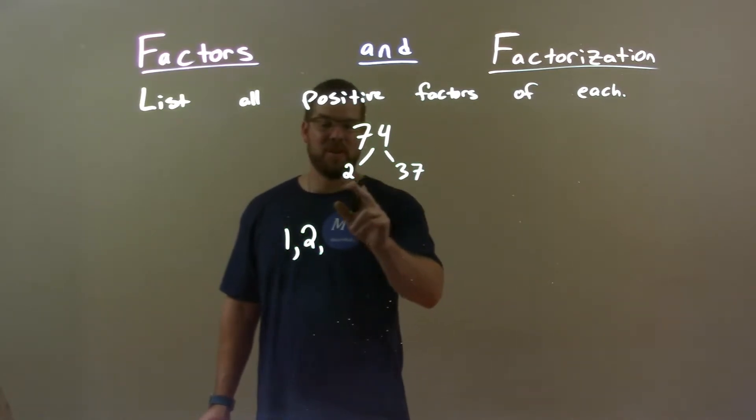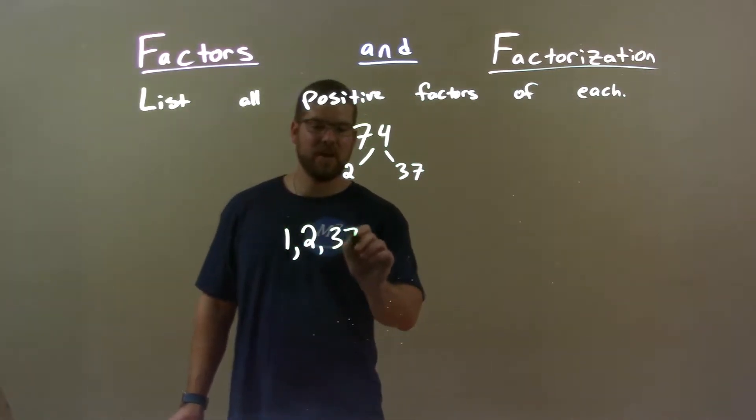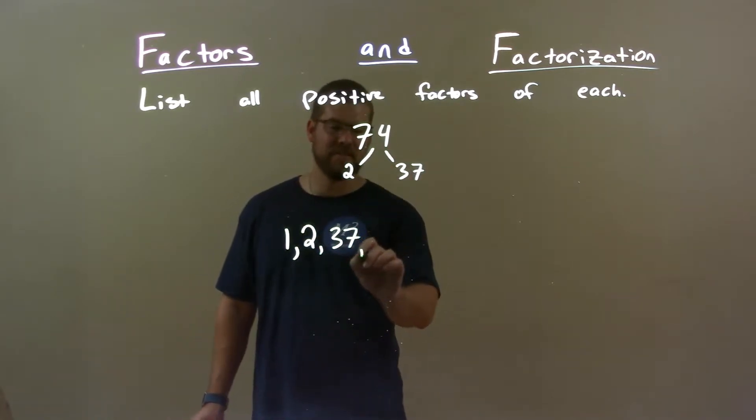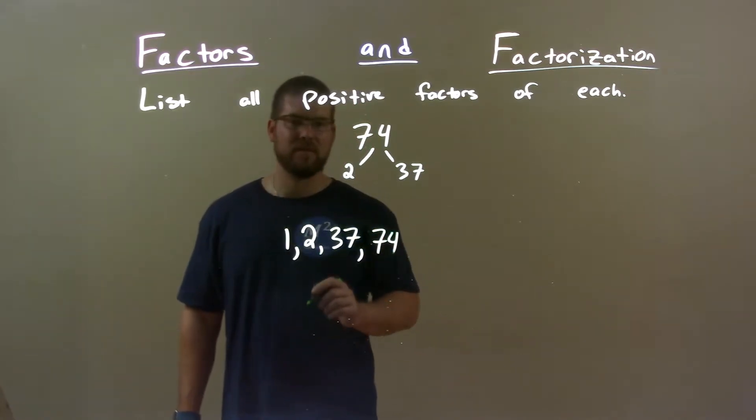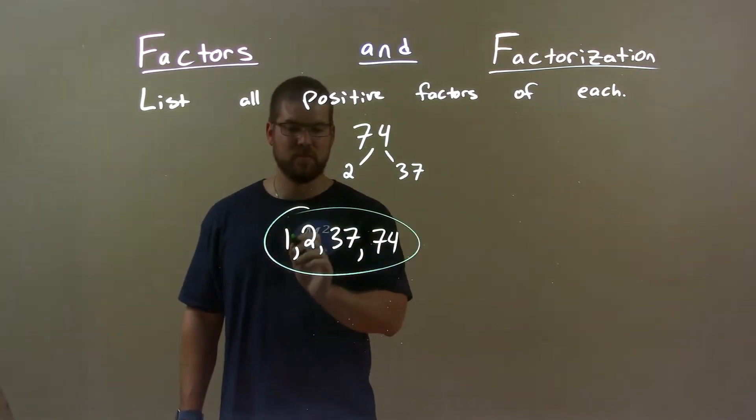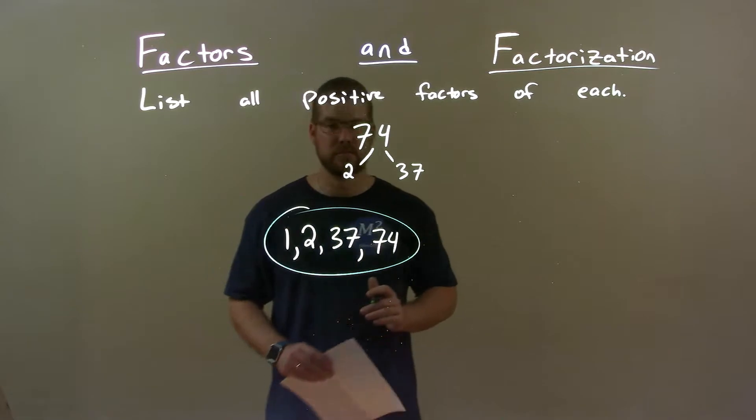Well, no other numbers are here, so the next one is actually 37, and 2 times 37 is 74. So there's nothing else besides 74. And so our final answer here is just 1, 2, 37, and 74.